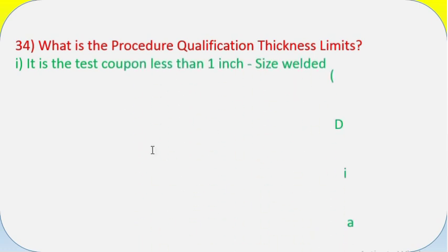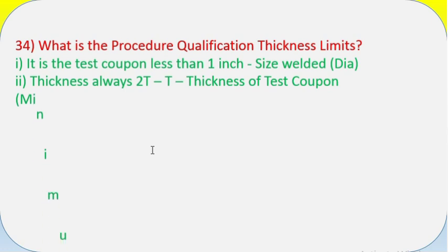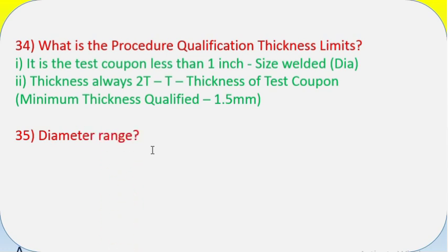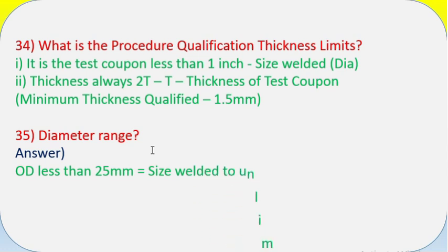Question 34: What is the procedure qualification thickness limits? Answer: (i) If the test coupon is less than 1 inch, size welded, diameter. (ii) Thickness always 2T - thickness of test coupon. Minimum thickness qualified 1.5 mm.